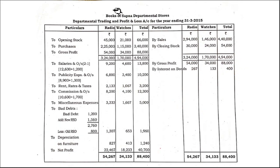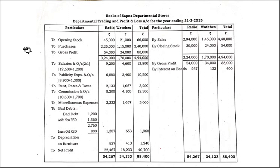Now let us prepare the departmental trading and profit and loss account. It is the same as a regular trading and profit and loss account but shown for different departments. We have columns for Radio department, Watches department, and a Total column for cross-verification. The format includes opening stock, purchases, any direct expenses, then sales and closing stock. Totaling both sides gives 3,24,000 each; the balancing figure is the gross profit.